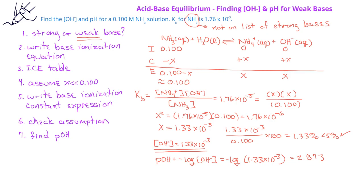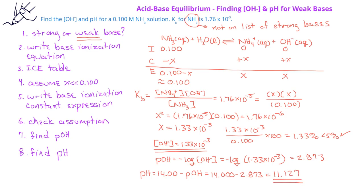Since we're asked for the pH, we can take 14 minus the pOH, or 14 minus 2.873, to find that the pH of a 0.100 molar ammonia solution is 11.127.